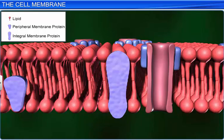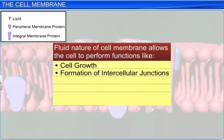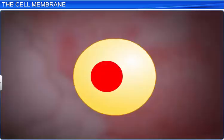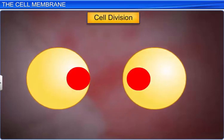The fluid nature of the membrane also allows the cell to perform important functions such as cell growth, the formation of intercellular junctions, secretion, and cell division. All these functions require flexibility in the membrane. For instance, during cell growth and cell division, the membrane has to extend.